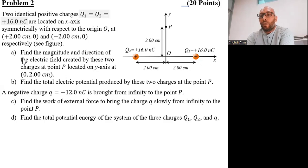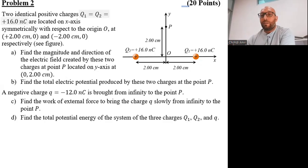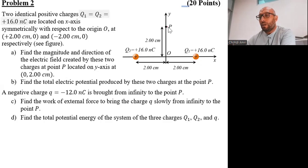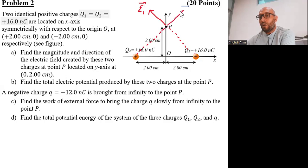Before writing the equations and starting to solve this kind of problem, it is highly recommended that you draw the electric field at point P. Starting with point charge Q1: since the charge is positive, it produces an electric field outward. This is the electric field E1 at point P, and this is the electric field E2 created by point charge Q2 at point P.